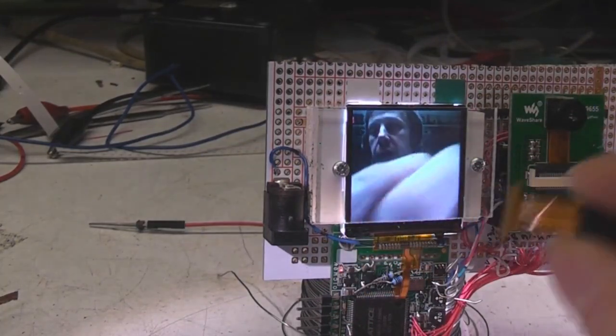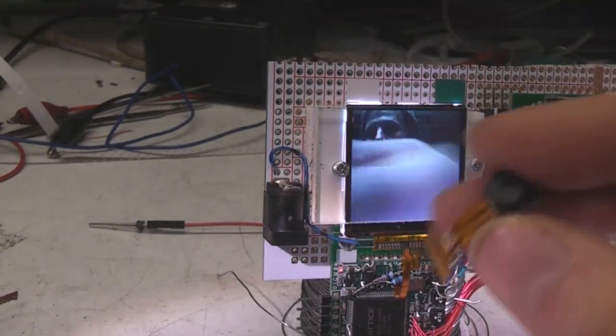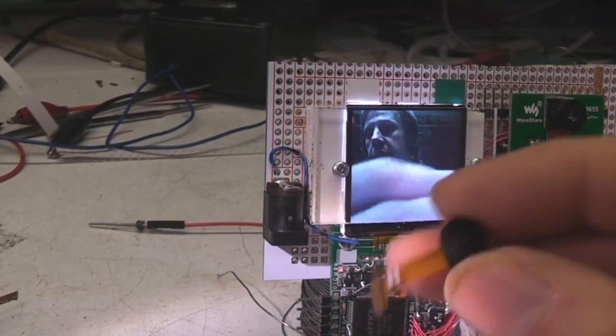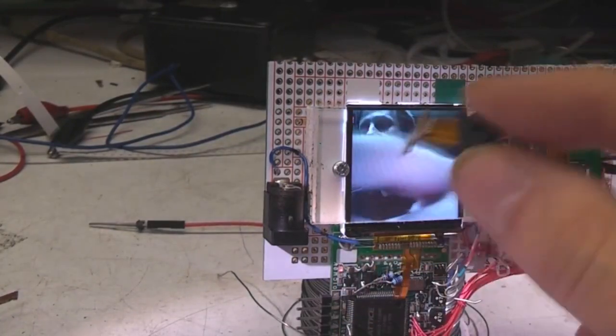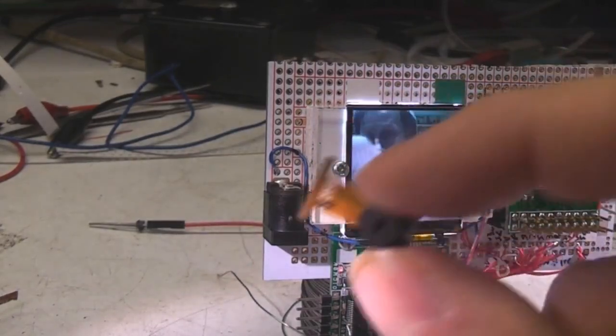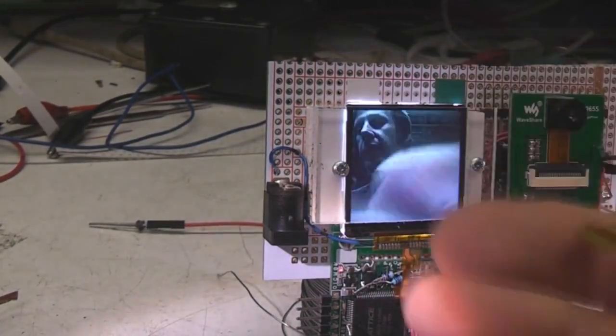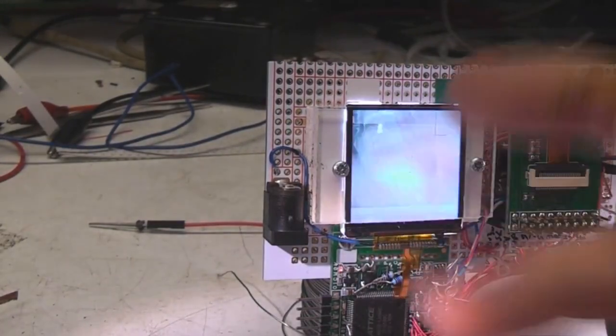But the nice thing is that because this display has got its own memory on board, in VGA mode they do 30 frames a second. And because this LCD has got its own memory it doesn't have to run exactly the same frame rate as the camera does. So you can take 30fps data from this, write it to the display and it will just update at the camera's update rate.